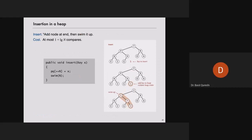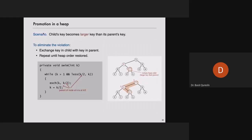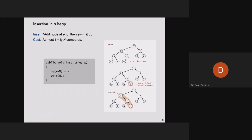Here's the insert method. Somebody gives you a key object to insert. We increment N to go to the last position and insert the value there. Once inserted, we call swim(N) — passing the last position — which takes care of bubbling it up. That's just two lines of code.